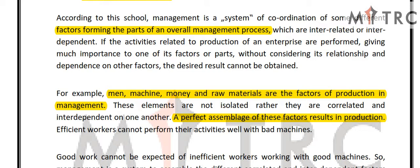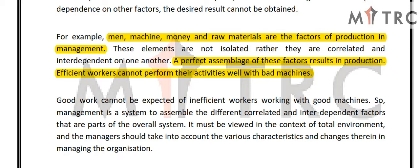Efficient workers cannot perform their activities well with bad machines. If the worker is good but the machine is bad, they cannot give 100% efficiency. So the worker's efficiency and the machine's condition are related — if the machine is good, the worker's efficiency is good. All factors are related to each other; they are correlated.